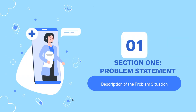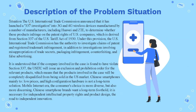Section 1: Problem Statement. The U.S. International Trade Commission announced that it launched a Section 337 investigation into 3G and 4G wireless devices manufactured by a number of manufacturers, including Huawei and ZTE, to determine whether these products infringe on the patent rights of U.S. companies. This is derived from Section 337 of the U.S. Tariff Act of 1930. The Commission has authority to investigate claims of patent and trademark infringement, trade secret misappropriation, packaging infringement, counterfeiting, and false advertising. If the company is found to have violated Section 337, the U.S. will issue an exclusion and prohibition order, meaning the products will be completely disqualified from being sold in the U.S. market.